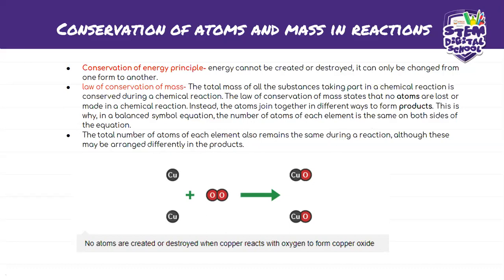The atoms join together in different ways to form products. In a balanced symbol equation, the number of atoms of each element is the same on both sides. The total number of atoms of each element also remains the same during the reaction, although they may be arranged differently. In a reaction, the left side is called the reactant side, and the right side is called the product side.